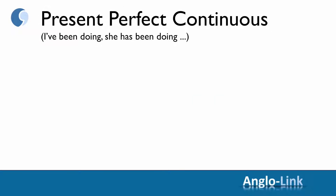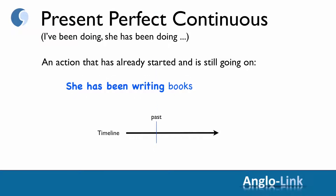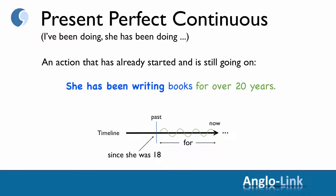Moving on, the next tense we looked at was present perfect continuous — I've been doing, she's been doing, etc. As you will remember, this is about an action that has already started and is still going on. For example: she has been writing books for over 20 years. You can also use the word since with this tense — for example, since she was 18: she has been writing books since she was 18.